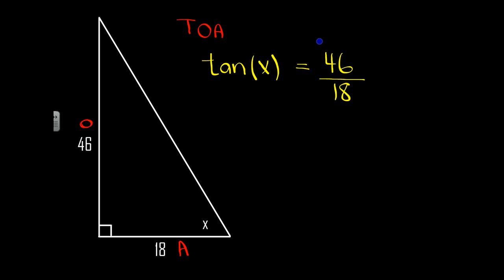Now you could look up 46 eighteenths in the table, or you could look it up using your calculator using the inverse tangent. So if I type in the inverse tangent of 46 eighteenths, that will look up the angle that corresponds with that ratio. So I type inverse tan, 46 divided by 18, and I get 68.6 degrees as my X.